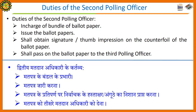Duties of the Second Polling Officer: The second polling officer is in charge of the bundle of ballot papers. Issues the ballot papers. Shall obtain the signature or thumb impression on the counterfoil of the ballot paper. Shall pass on the ballot paper to the third polling officer.